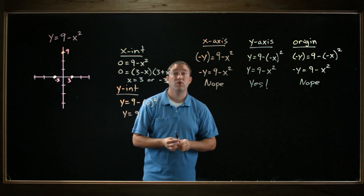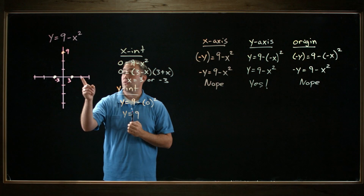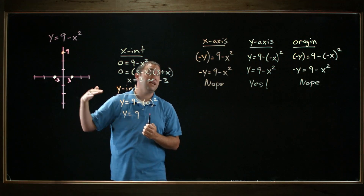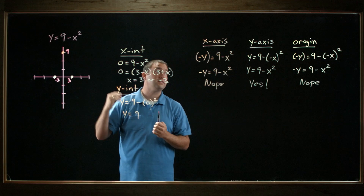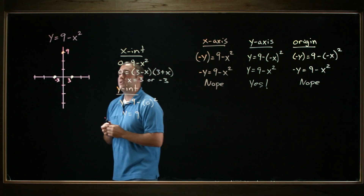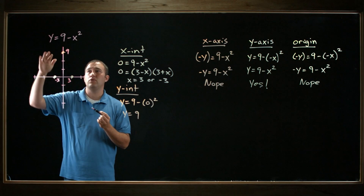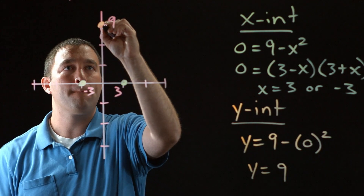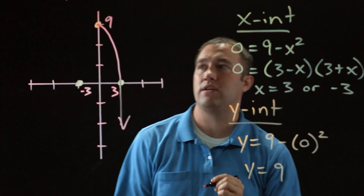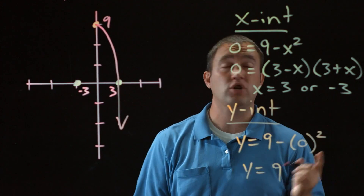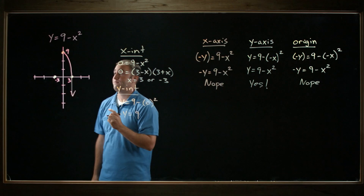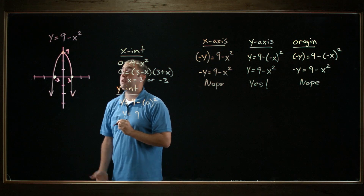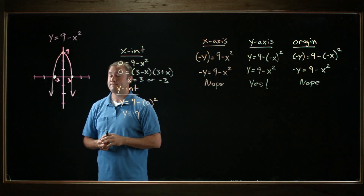So whatever this graph looks like, it hits at 3 and negative 3 on the x-axis, it hits at 9 on the y-axis, it's not symmetric about the x-axis, it is symmetric left and right about the y-axis, and it's not symmetric about the origin. Since it's not a linear equation, it won't be a straight line — I'll draw a little curve. I'll just draw the right side, connect those dots, and since it's symmetric about the y-axis, it should look the same on the left as it does on the right. The function must look something like this — an upside-down parabola. Thank you.